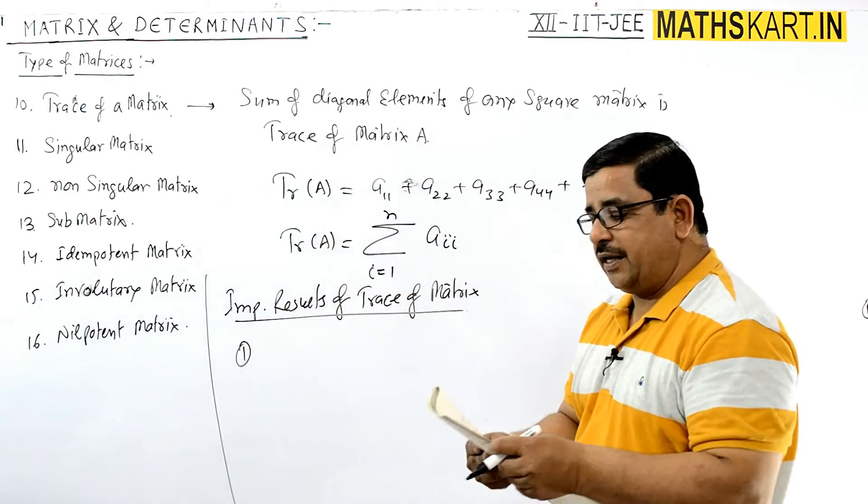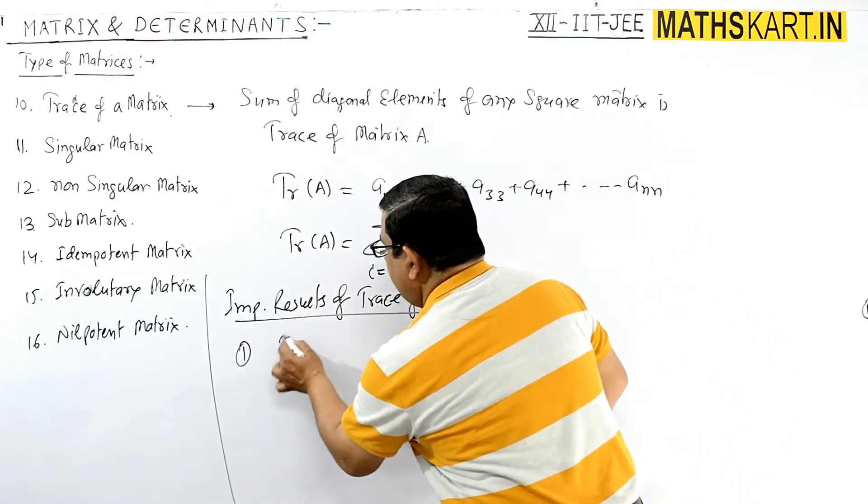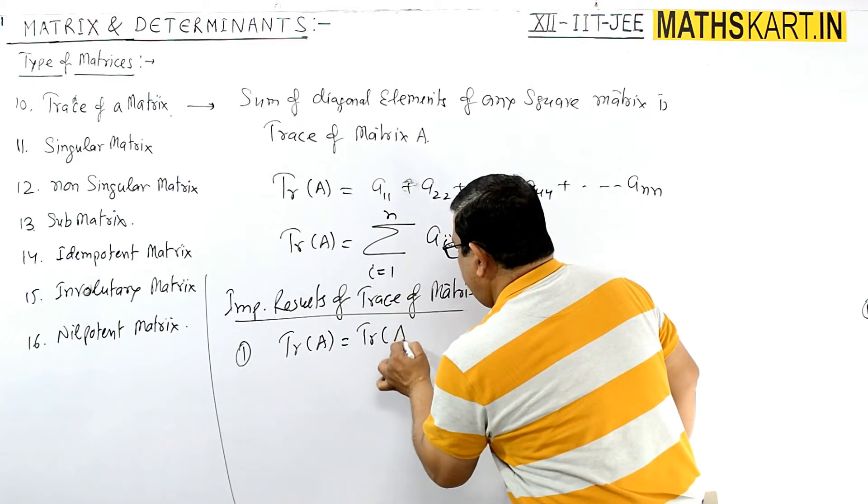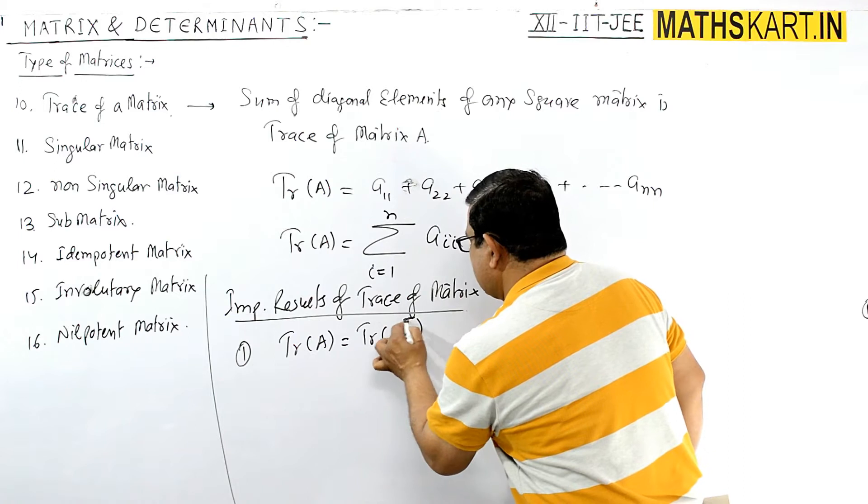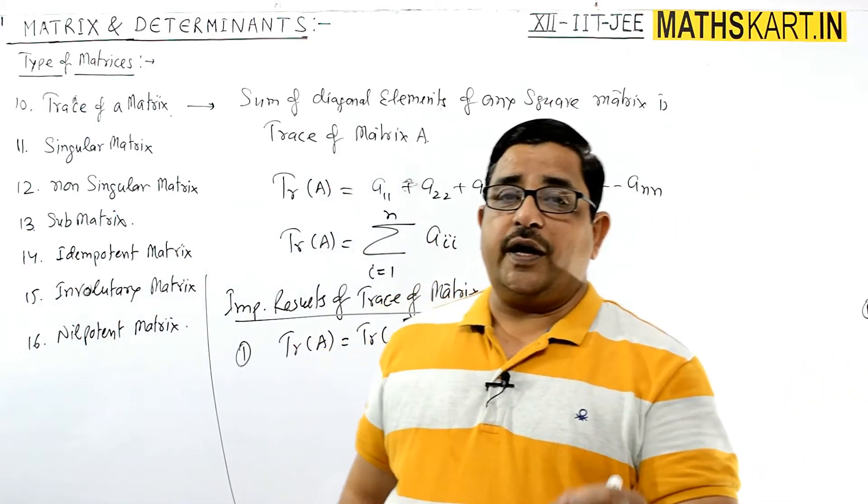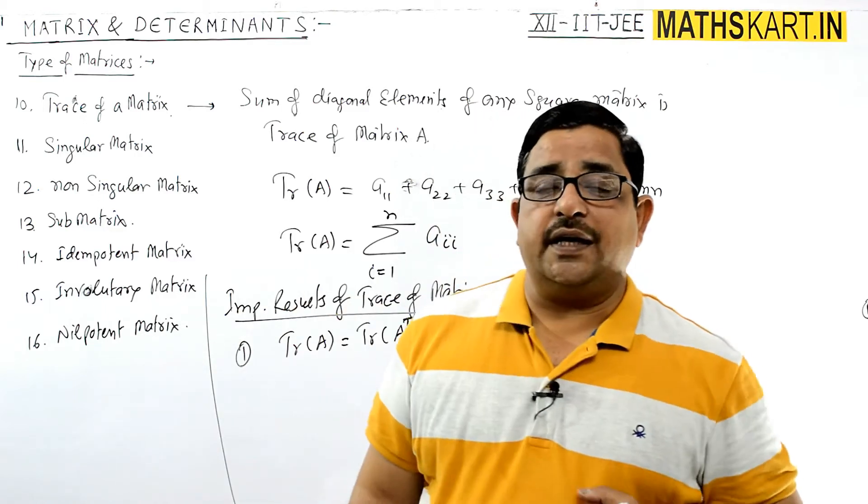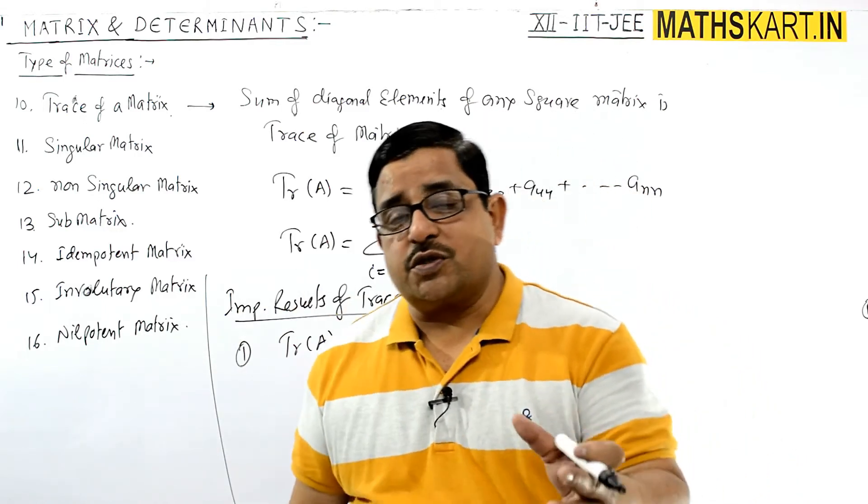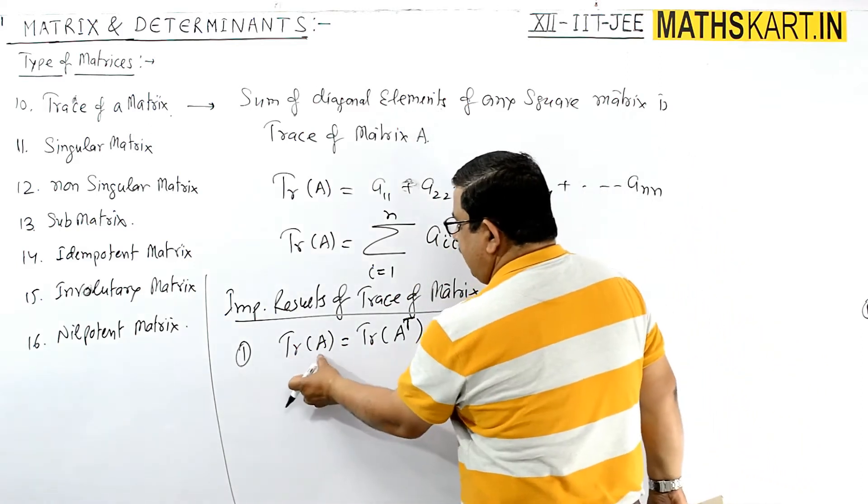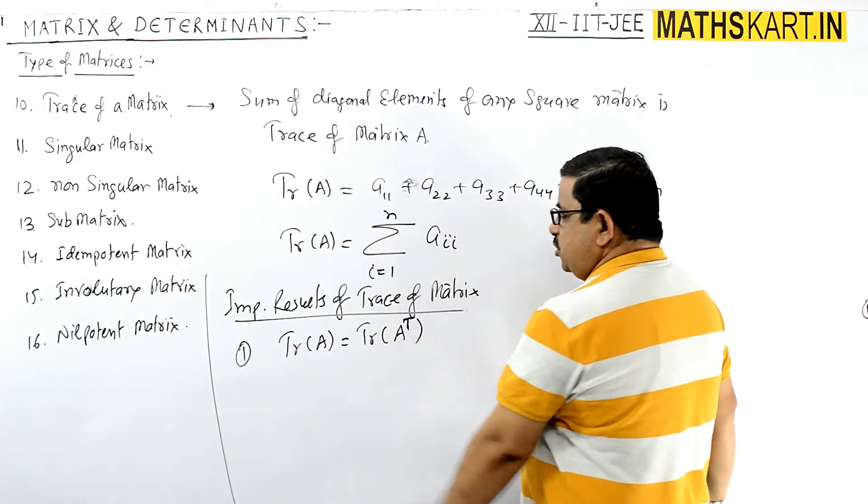Number one: trace of a matrix is equals to trace of A transpose. We haven't discussed transpose yet, so we'll discuss it ahead - how to find transpose of a matrix and its trace.